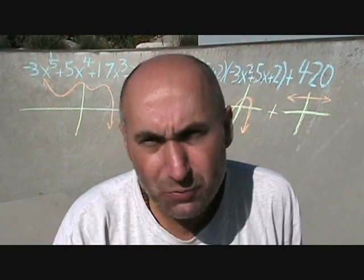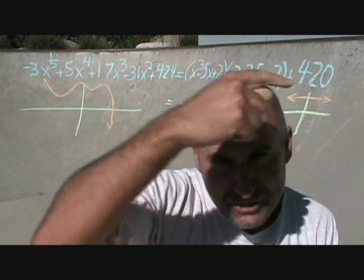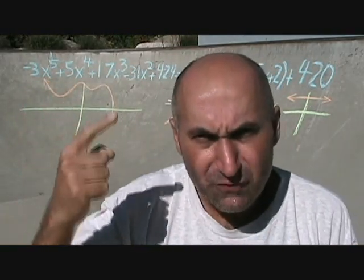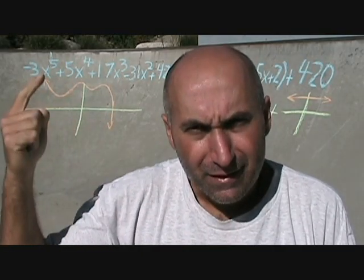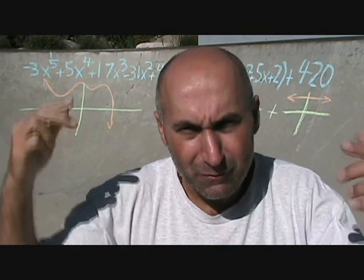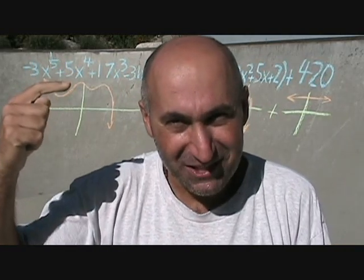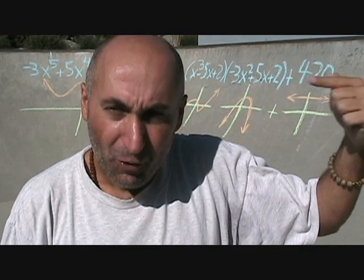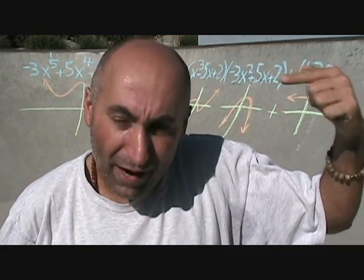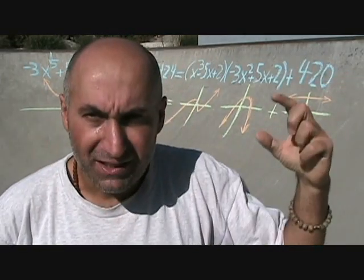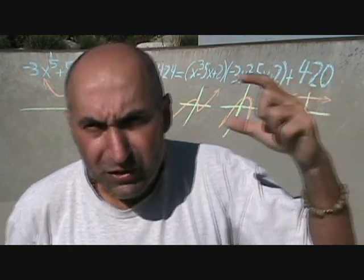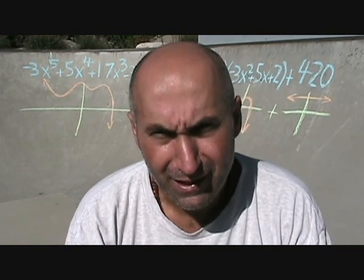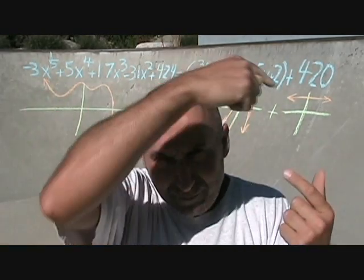Graphically, the division statement is saying this function equals these other functions combined. One thing to keep in mind: the graphs are not to scale. The horizontal line is actually at y = 420, while the other functions are on a smaller scale. The Cartesian coordinate systems shown all have different scales — it's just a presentation of what each piece looks like.